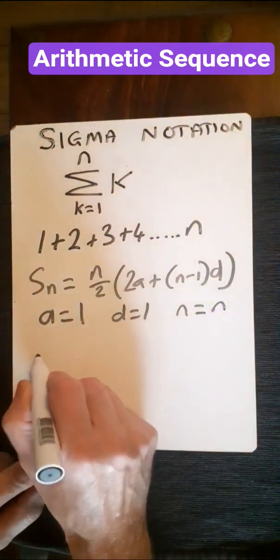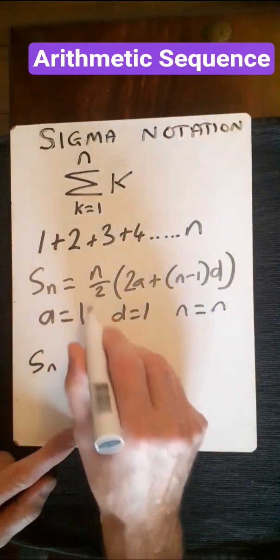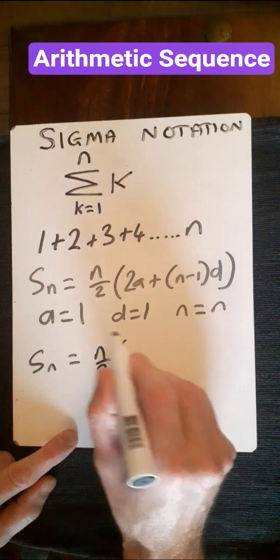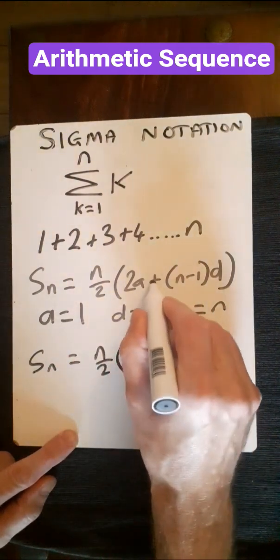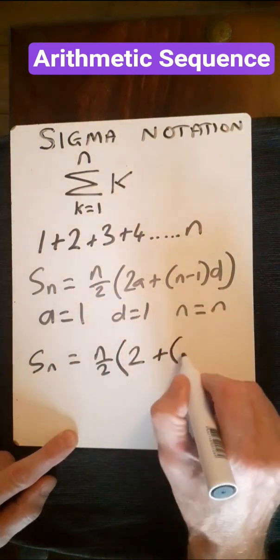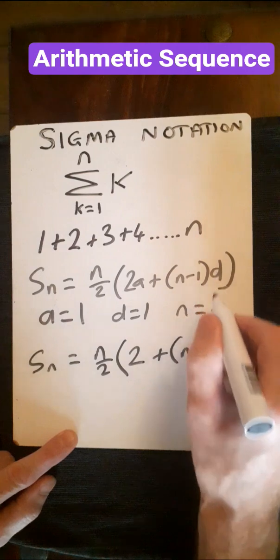So now plug in, we've got Sn equals n over 2. 2 times a is just 2, plus n minus 1, so n just stays that, and d is just 1.